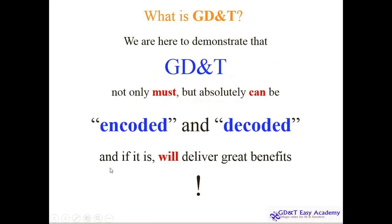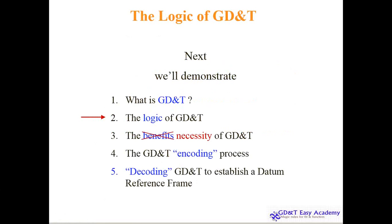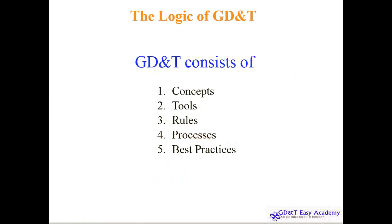If GD&T is properly encoded and decoded, it will deliver greater benefits — there is no doubt about it. We've understood the first scenario, common misconceptions, and what needs to be done. The primary point here is: what is the logic of GD&T? Then we'll move to other topics like the necessity of GD&T, the encoding process, the decoding process, and so on.